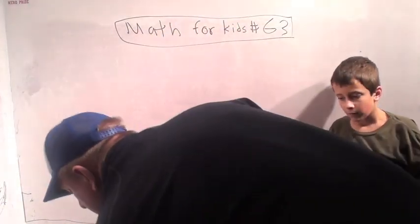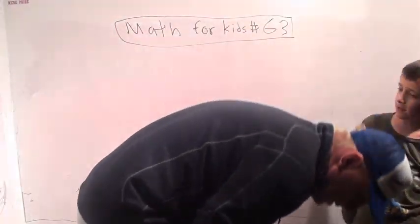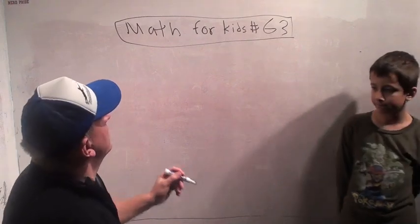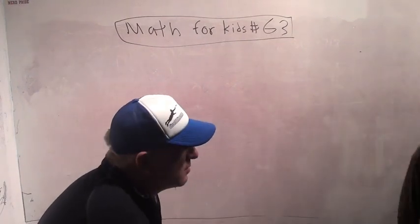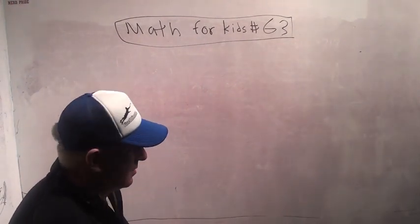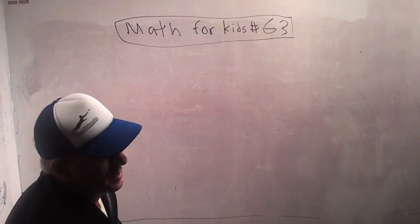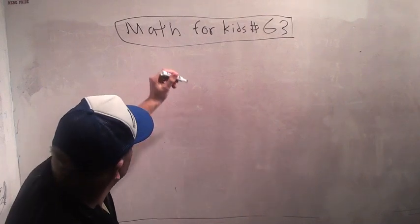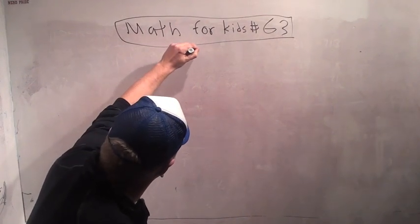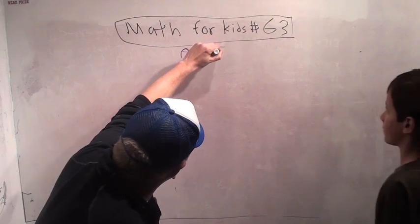Okay, good evening. Welcome to Math for Kids number 63. This week we're going to do a really special week and learn about something really complicated. Second graders don't get to learn about it. It's called Pell's equation.